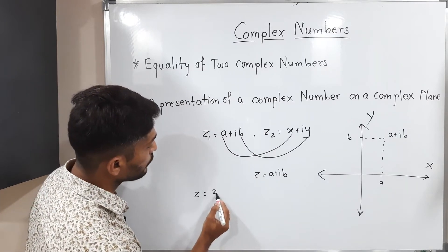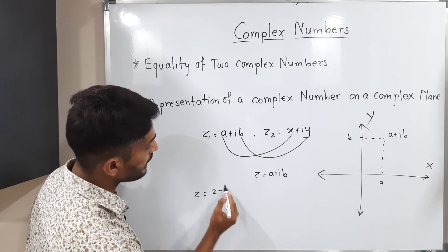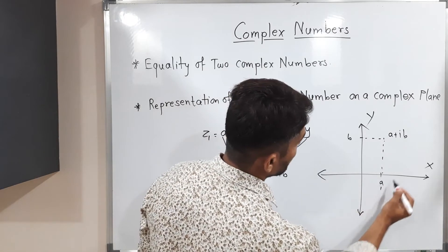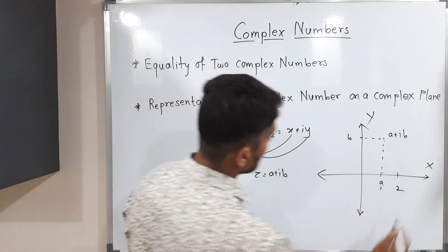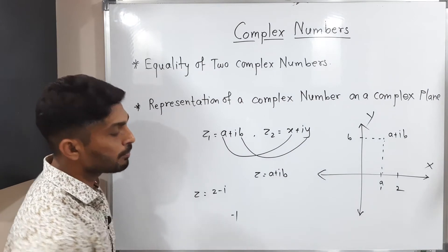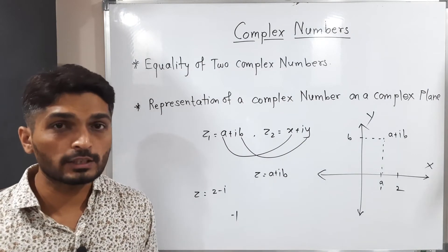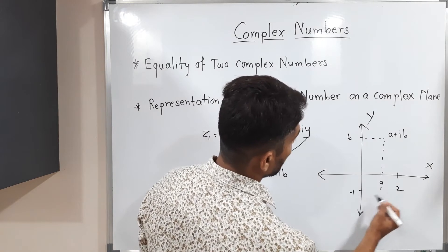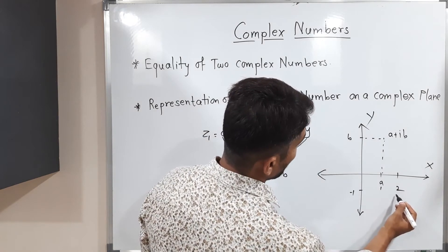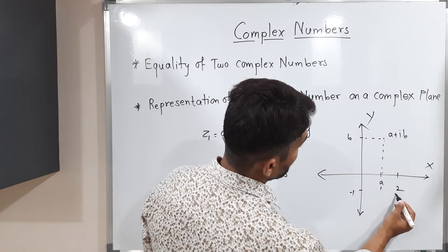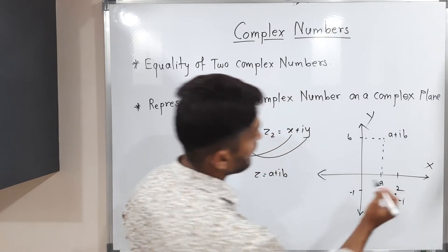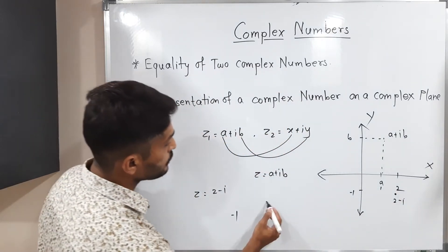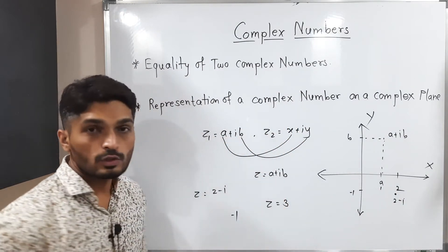Let us discuss a few examples. Suppose z equals 2 minus i. The real part is 2 and the imaginary part is minus 1 (the coefficient of i). So the point is at (2, minus 1) on the complex plane — that is where 2 minus i is plotted.